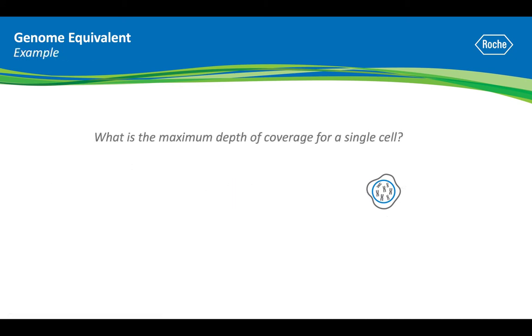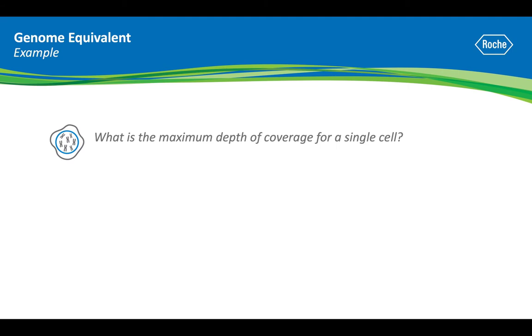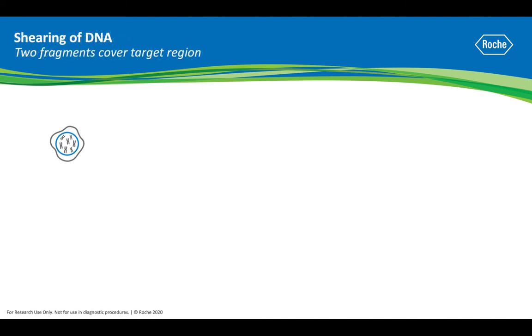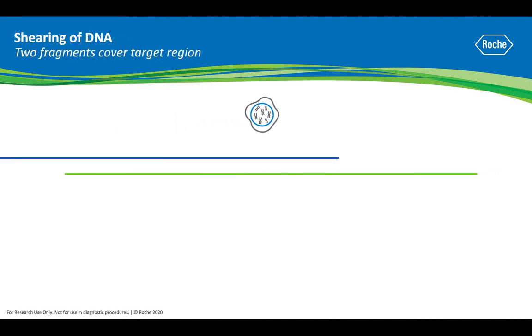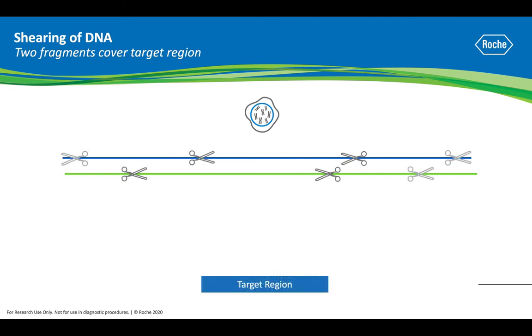So, how does this relate to coverage depth and specifically to the maximum depth of coverage that is possible with a given sample? Let's start by considering the simplest example — a single cell, which contains two genome equivalents. A common misconception is that to achieve greater coverage, you can just sequence more.